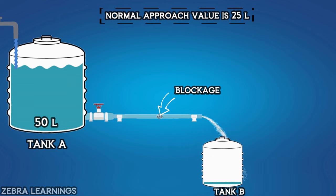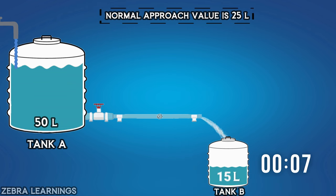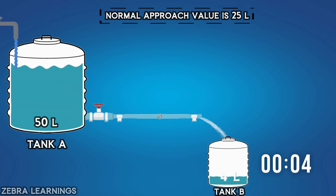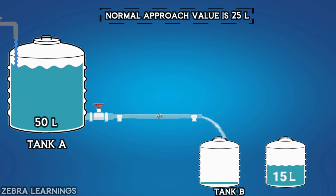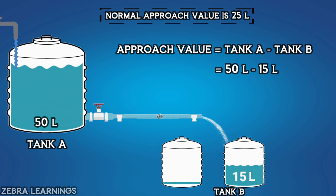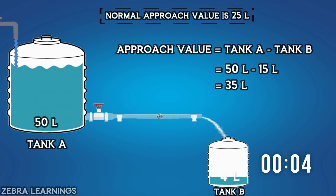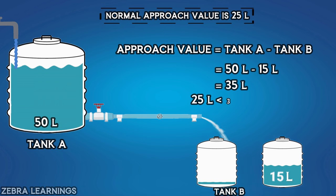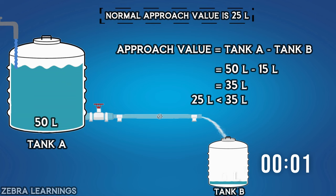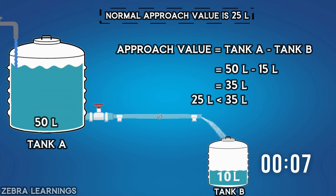If there is a blockage in the pipeline and the water flow is not proper, then instead of filling 25 liters in 10 seconds, only 15 liters will be filled. The approach value becomes: tank A 50 liters minus tank B 15 liters equals 35 liters. So if the approach value is higher than the normal approach value, it means there is a problem in the system. This concept is also used to calculate the chiller approach value.